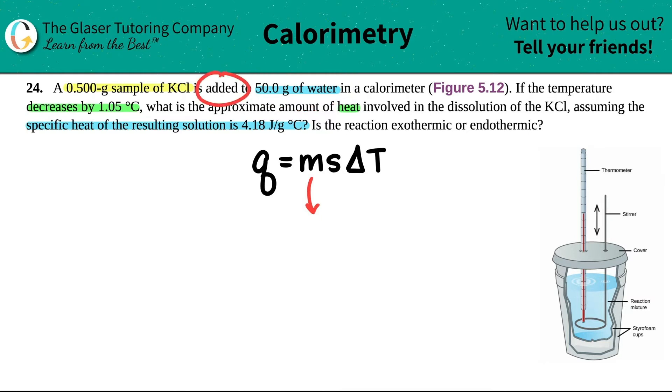I mean, they literally said the word added here. So I have to add these two amounts together. So it would be the 0.500 grams of the KCl plus the 50 grams of the water. That's what a solution is. So KCl, water, cool.